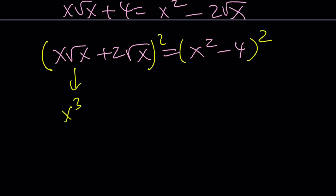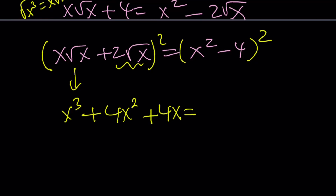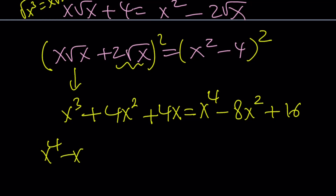This is also helpful with factoring and algebra: square root of x cubed can be written as x root x, with x positive. So when you square it, you get x cubed. Plus 2AB: 2 times 2 is 4, and x root x times root x is x times x, which is x squared. Squaring 2 times square root of x gives 4x. On the right, we get x to the 4th minus 8x squared plus 16. Putting everything on the same side: x to the 4th minus x cubed minus 12x squared minus 4x plus 16 equals 0.